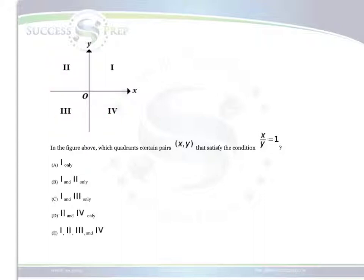At this point, let's look at the types of values we could put in for all quadrants that could produce a 1 when we calculate x over y. So let's take a look at the first one. An example would be (3, 3) for quadrant 1.